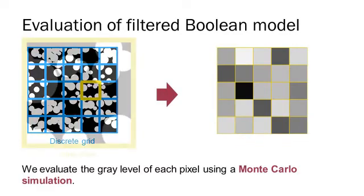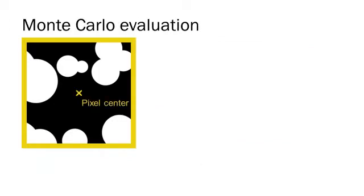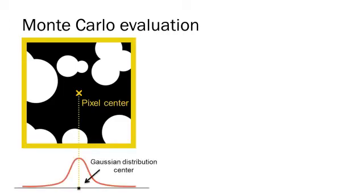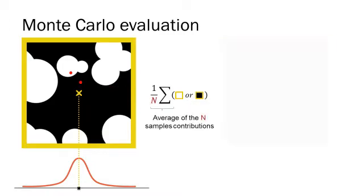We evaluate the grey level of each pixel using a Monte Carlo simulation. For a given pixel, the Monte Carlo simulation consists in evaluating the Boolean model at a certain number of points which are sampled with a Gaussian distribution centered on the pixel. Each evaluation is equal to 1 if the sample point is covered by a model, and equal to 0 otherwise. The final output grey level is the average value of all the samples.